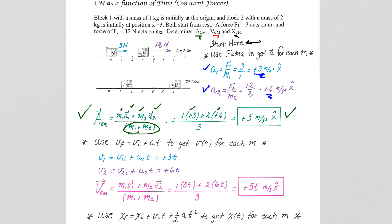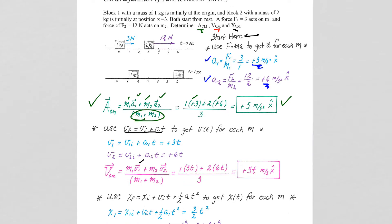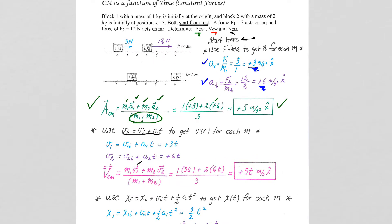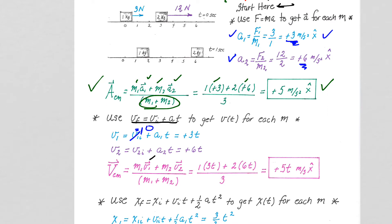To get the velocity of the center of mass, we are going to calculate the individual velocities using the constant acceleration equations, because if it's a constant force, we have constant acceleration. V final equals V initial plus acceleration times time. So V1 equals V1 initial plus A1 times time. We were told they both start from rest, so V1 initial is zero, giving us V1 equals A1 times T, which is three T.